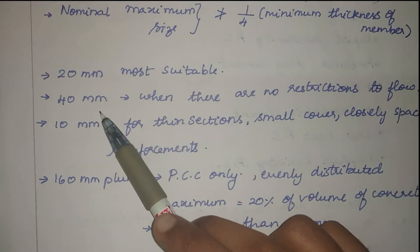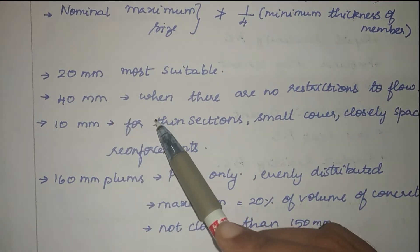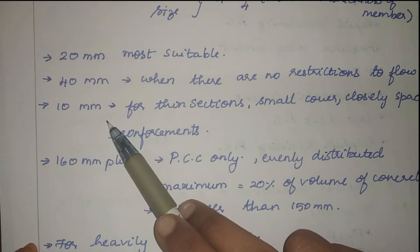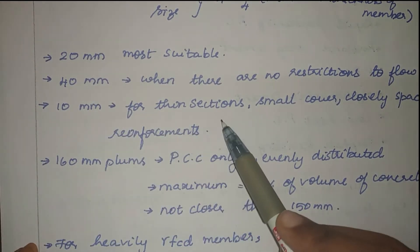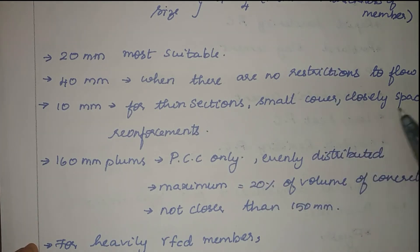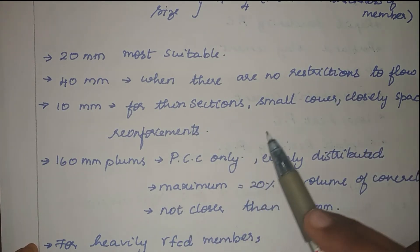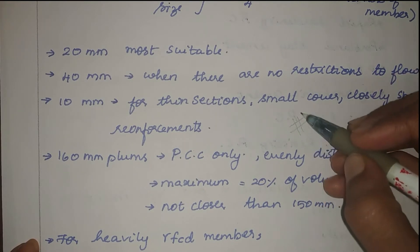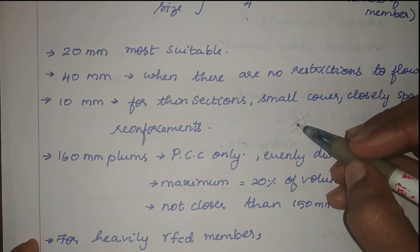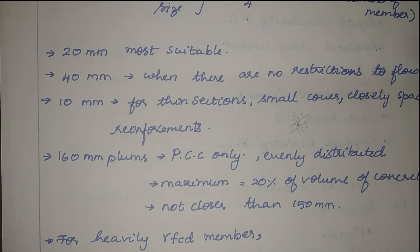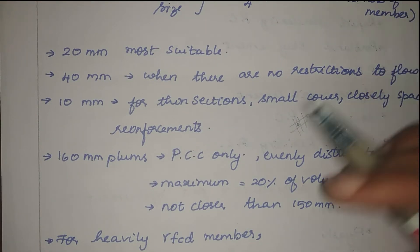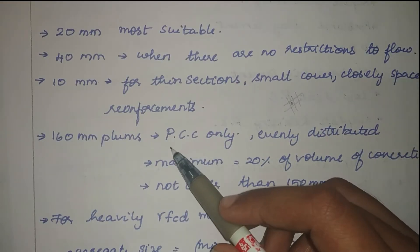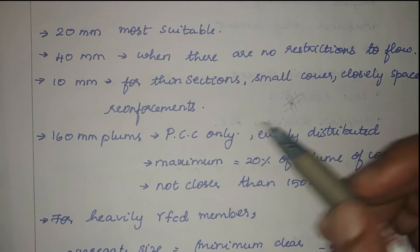40 mm aggregates are used where there is no restriction to flow. 10 mm aggregates are used for thin sections, small cover, and closely spaced reinforcements — because if reinforcements are close together, the aggregate must be smaller so it can completely fill the section. 160 mm plums can be used only in PCC — plain cement concreting.